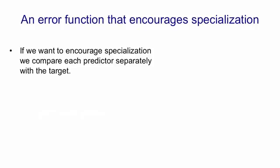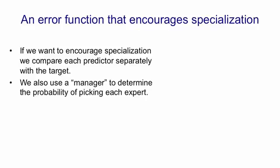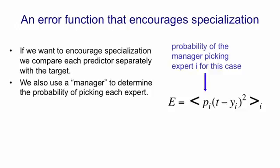So here's an error function that encourages specialization. And it's not very different. To encourage specialization, we compare the output of each model with the target separately. We also need to use a manager to determine the weight we put on each of these models, which we can think of as the probability of picking each model if we had to pick one. So now, our error is the expectation over all the different models of the squared error made by that model times the probability of picking that model, where the manager or gating network is determining that probability by looking at the input for this particular case.